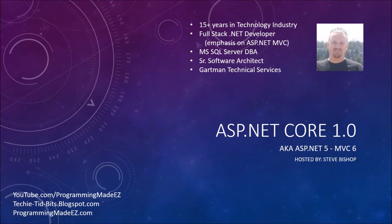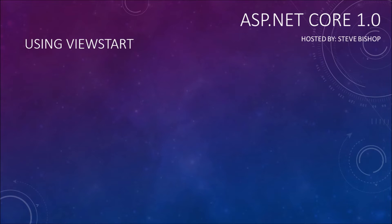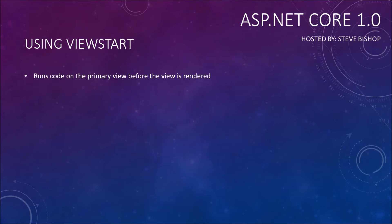Hello everyone and welcome back to ASP.NET Core 1.0. My name is Steve Bishop and in this video we're going to be talking about using a view start file. A view start file runs code on the primary view before the view is rendered. So when we call our index.cshtml or our customer list.cshtml file, this view start file will actually run code against that view before the view is rendered.